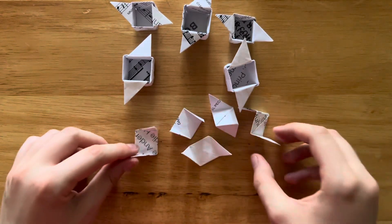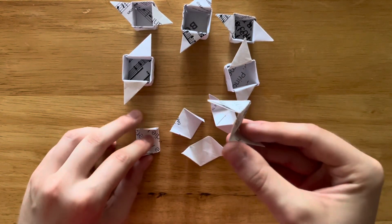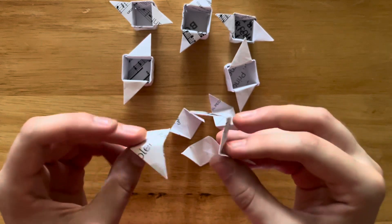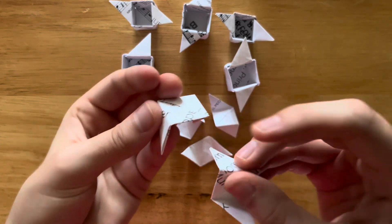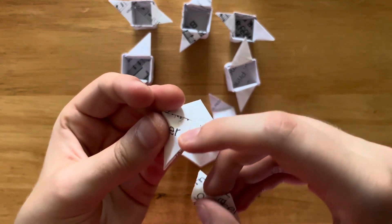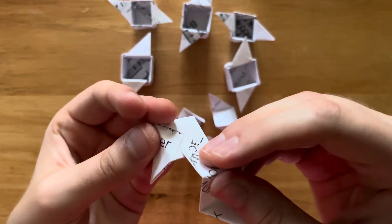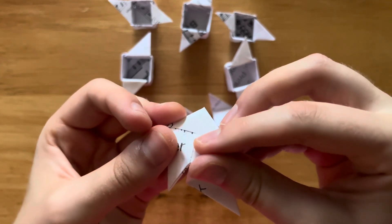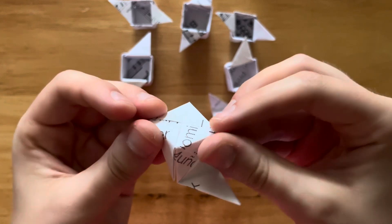Now we have to assemble these into the little unit. You're going to take one of your Z-shaped units and one of your flat side units. Here, this little line is the pocket. So you're going to put the tip into the pocket like this.